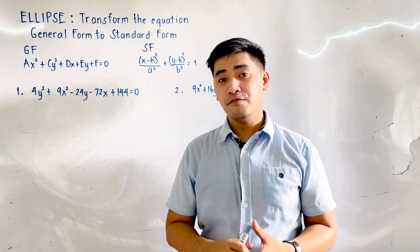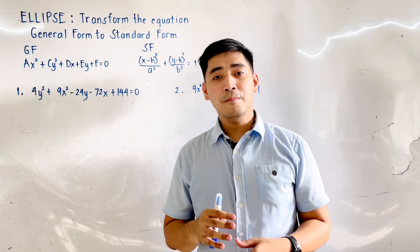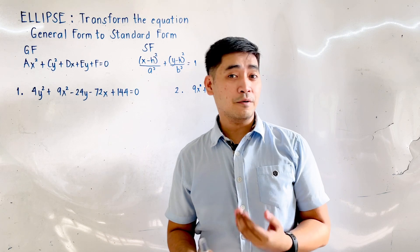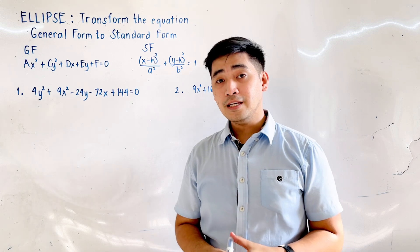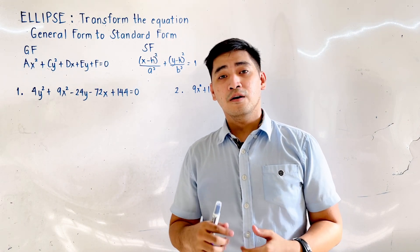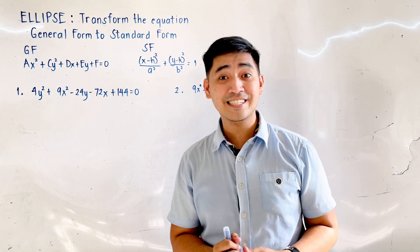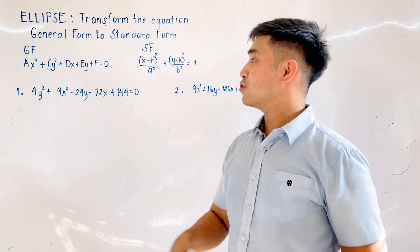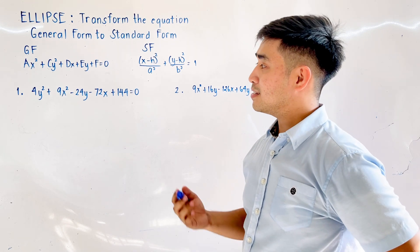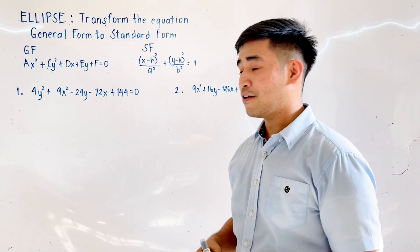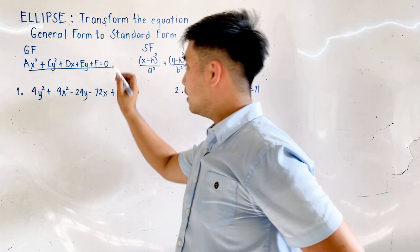But for today's video lesson, what we will be doing is to transform an equation of an ellipse from the general form to its standard form, and from its standard form to the general form. We should first identify the general form and standard form. The general form of an ellipse is given by ax² + cy² + dx + ey + f = 0.